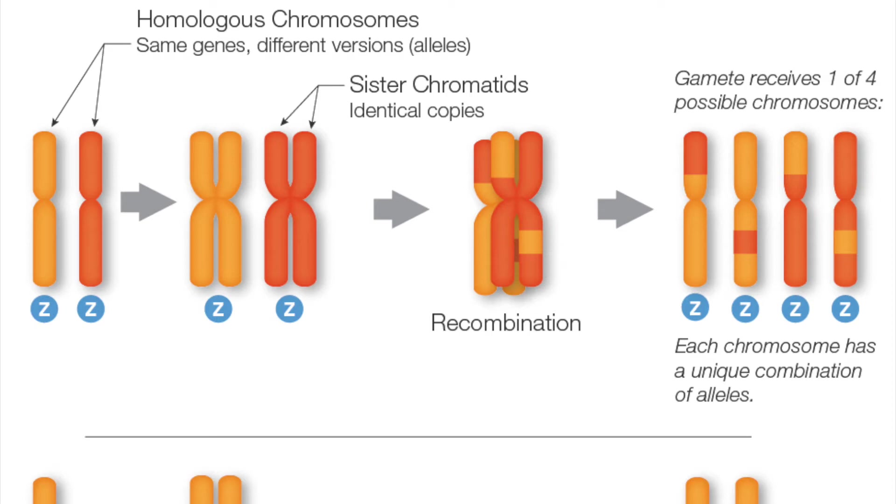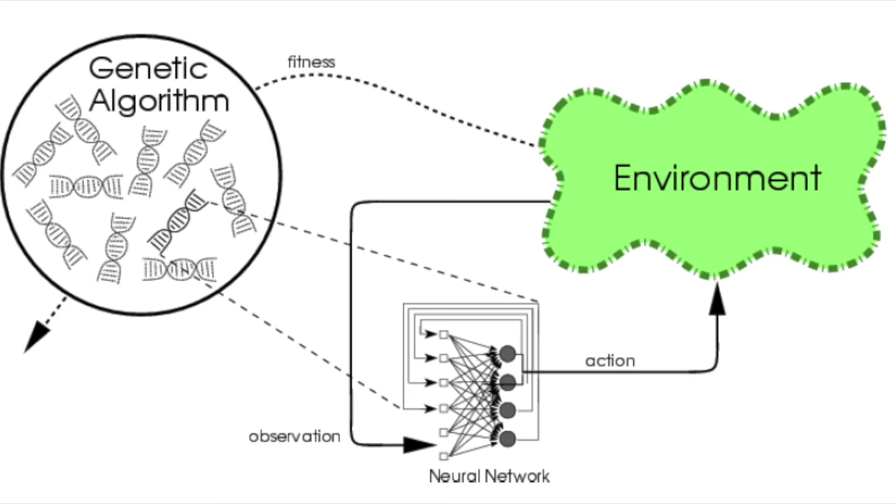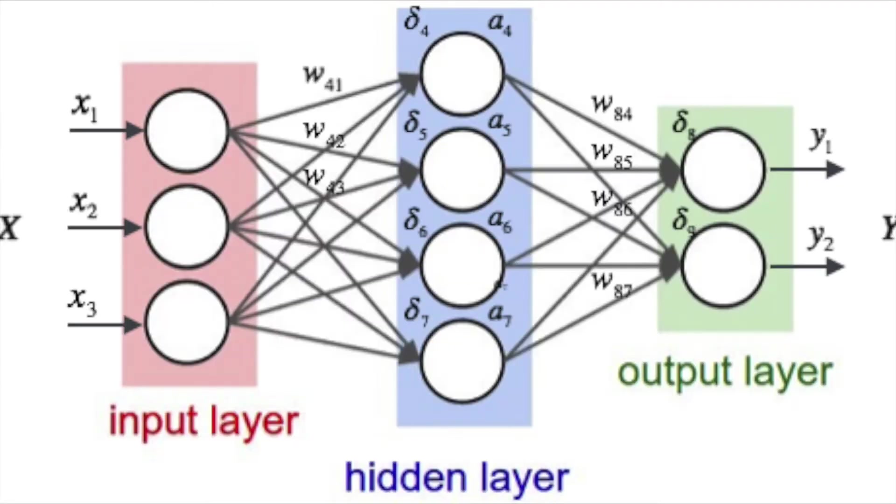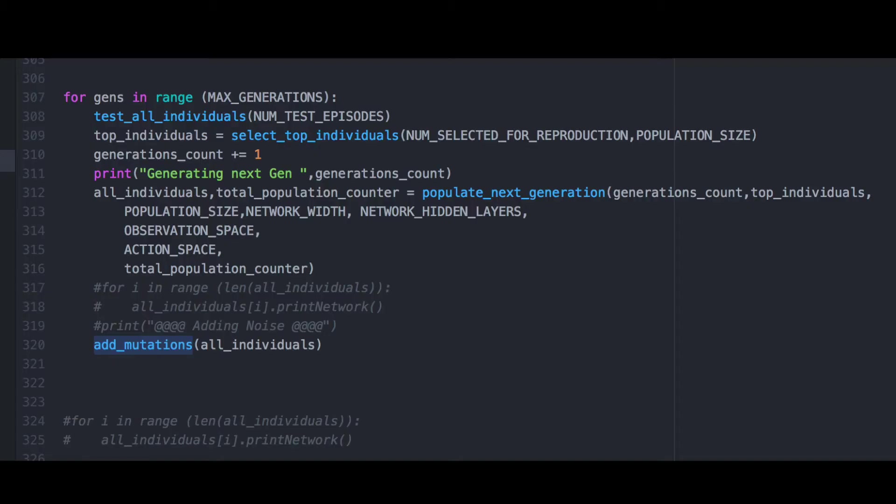We will need: 1. A set of features that are going to distinguish each individual. For us, this is going to be the individual weights of our neural network. Our neural network will then be responsible for determining courses of action based on the input it gets from its environment.